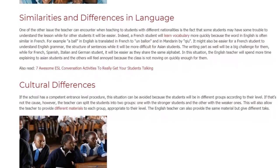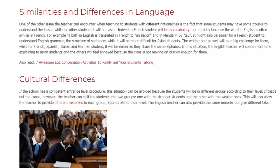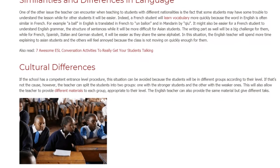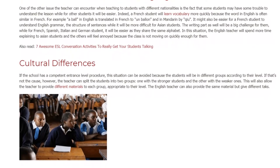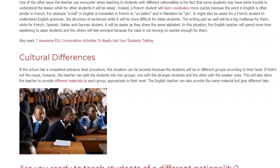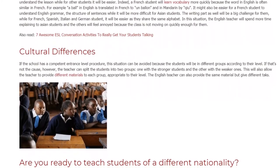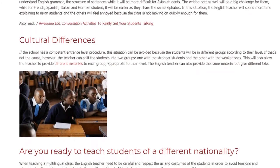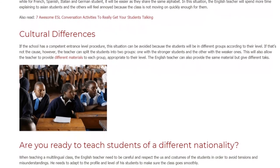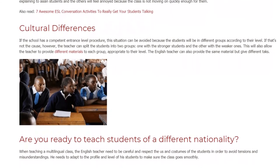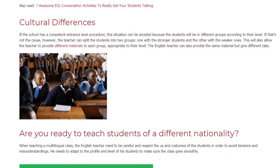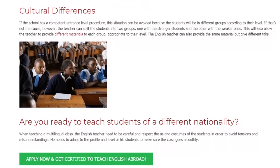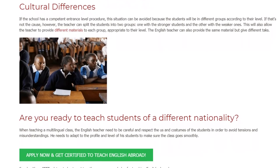In this situation, the English teacher will spend more time explaining to Asian students and the others will feel annoyed because the class is not moving on quickly enough for them. If the school has a competent entrance level procedure, this situation can be avoided because students will be placed in different groups according to their level. If that's not the case, however, the teacher can split the students into two groups — one with the stronger students and the other with the weaker ones. This will also allow the teacher to provide different materials to each group, appropriate to their level. The teacher can also provide the same material but give different tasks.